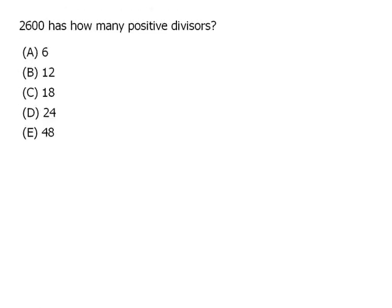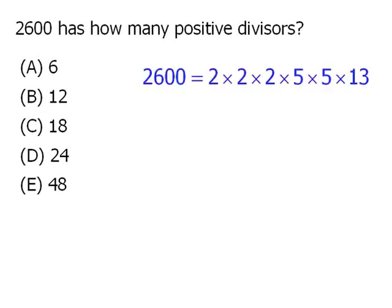Let's begin by finding the prime factorization of 2600. We can simplify this as follows. The important point to recognize is that every divisor of 2600 will be the product of a certain number of 2s, 5s, and 13s.